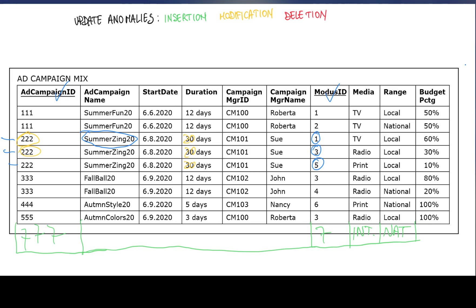For instance, suppose we realize that campaign 444 never existed — it's just a wrong record — and we want to delete it. If we delete this record, we also end up losing information about Modus 6, which was only used for campaign 444. This can be a problem if, for instance, we want to retrieve a list of all the modi available that we can sell to customers — we will have lost information about Modus 6, because it was removed together with campaign AD444.